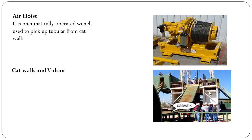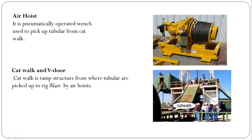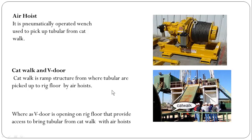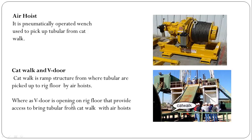Air hoist. It is a mechanically operated vent used to pick up tubular from the catwalk, and it can also be used to lay down tubular from the mouse hole or from the rig floor to the catwalk. Catwalk and V-door: the catwalk is a ramp structure from where tubulars are picked up to the rig floor by the air hoist, whereas the V-door is an opening on the rig floor that provides access to bring tubular from the catwalk to the air hoist.